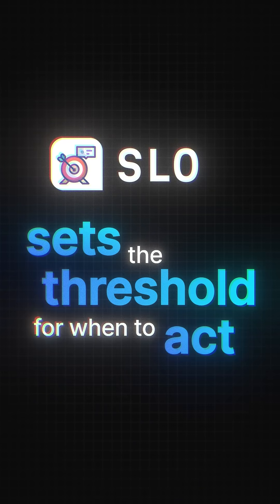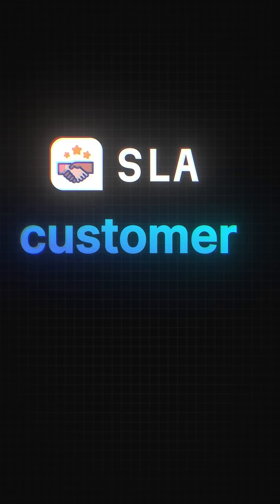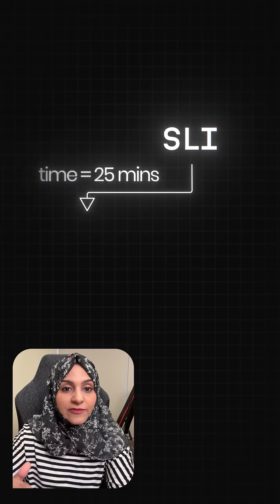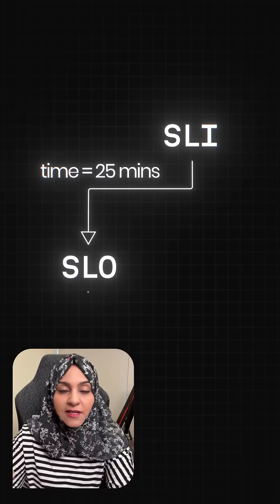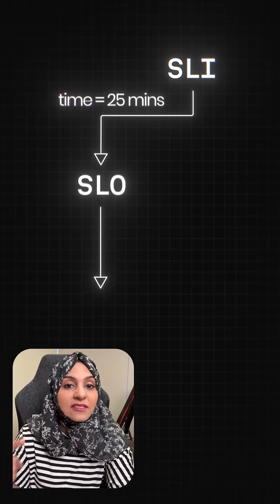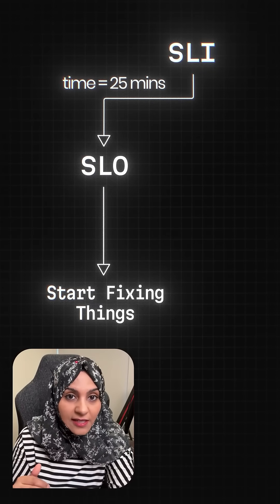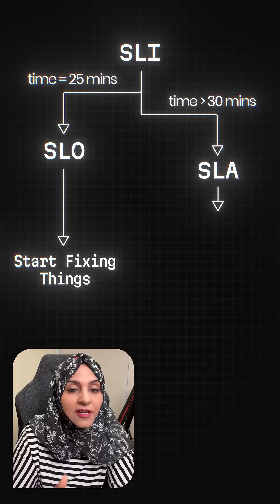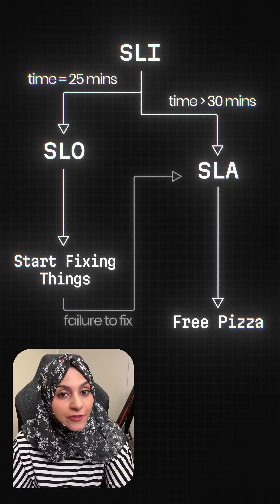How does it all connect? SLI tells you how you're doing, SLO sets the threshold for when to act, and SLA is a customer-facing promise with a penalty if it's broken. If the SLI consistently measures 25 minutes, the SLO is hit and the teams start fixing things. If they can't, and the delivery time exceeds 30 minutes, the SLA is breached and the customer gets their pizza for free.